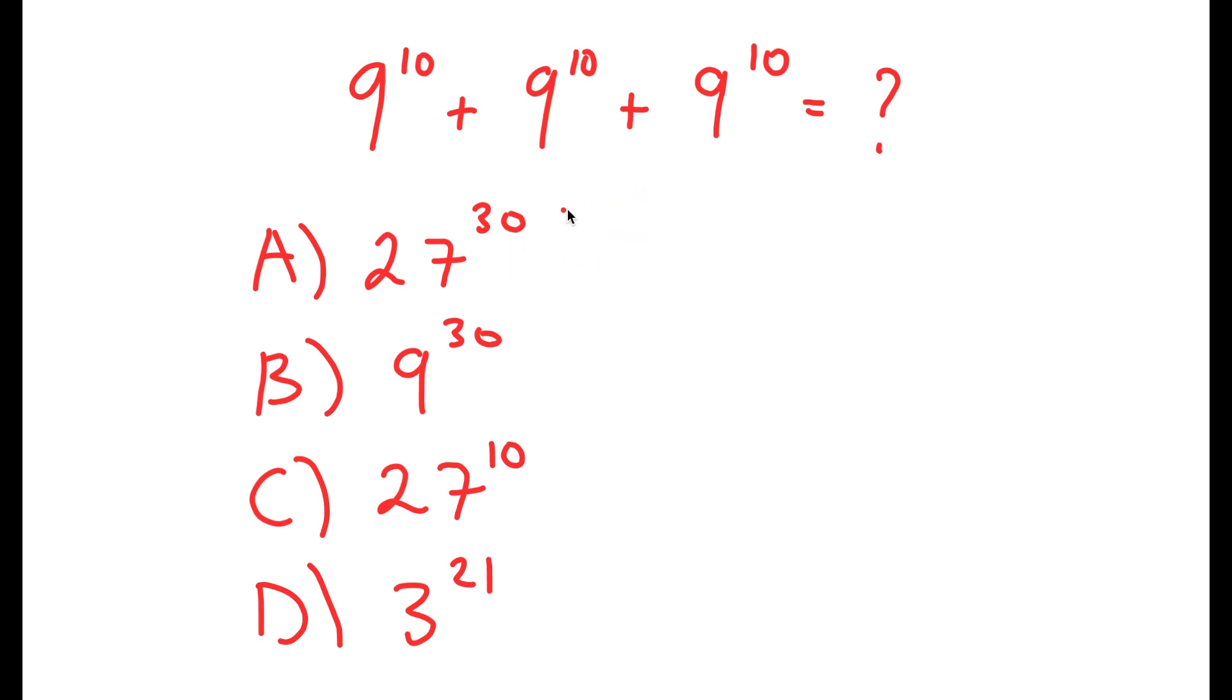So let's first start with option A, 27 to the power of 30. The way someone likely got this is by adding all of the bases and then adding all of the exponents.